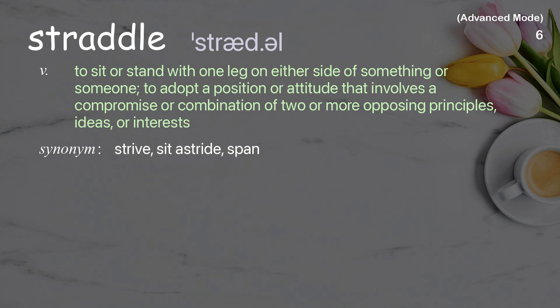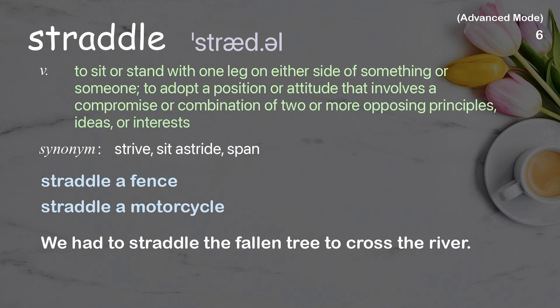Straddle: to sit or stand with one leg on either side of something or someone; or to adopt a position or attitude that involves a compromise or combination of two or more opposing principles, ideas, or interests. Examples: straddle a fence, straddle a motorcycle. We had to straddle the fallen tree to cross the river.